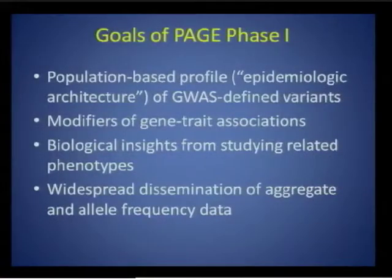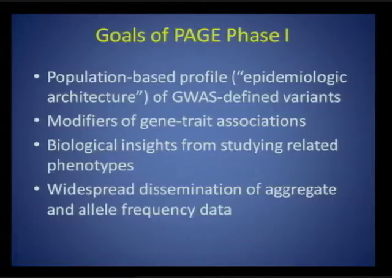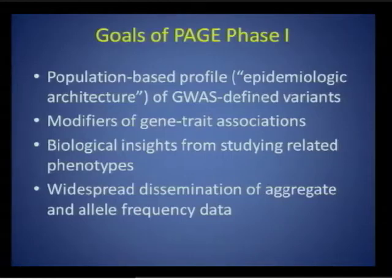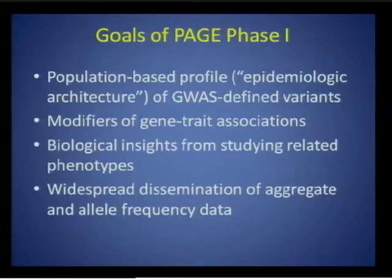The scientific goals of phase one of PAGE were as follows. First, to characterize the population-based profile of GWAS-defined variants — the epidemiologic architecture, meaning the distribution of allele frequencies and association sizes across different populations. A second goal was to go beyond simple SNP-disease associations and look at gene-environment interactions. A third goal was to take advantage of the full range of phenotypes to derive new biological insights. The fourth goal was to widely disseminate aggregate and allele frequency data to the scientific community.